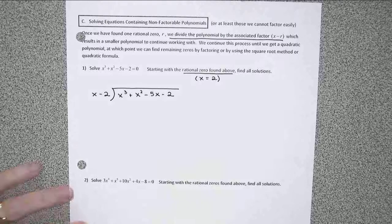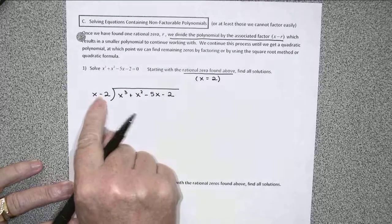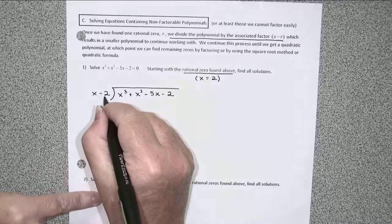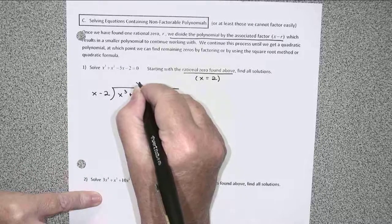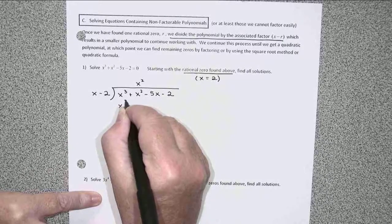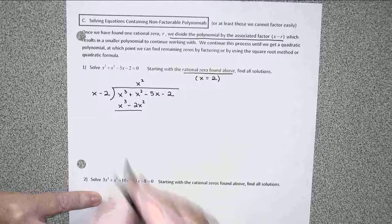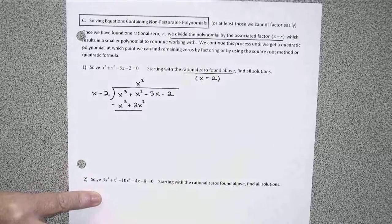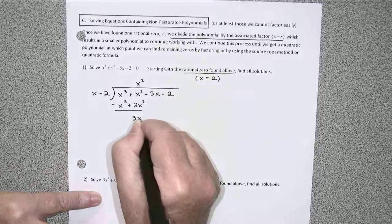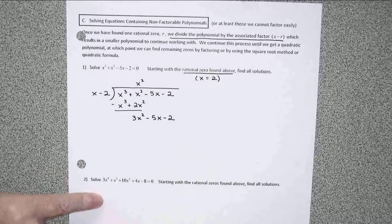So we're going to go ahead and divide that known factor into our original polynomial. If you're comfortable with synthetic division, you can do this fairly quickly. But I'll go ahead and do long division since we didn't require the synthetic. Dividing x cubed by x gives me x squared and multiplying x cubed minus 2x squared. I'm subtracting, 0x cubed, 3x squareds.